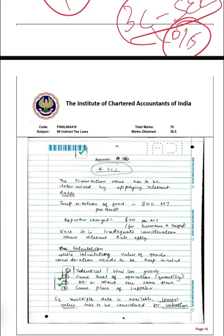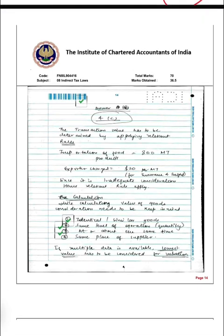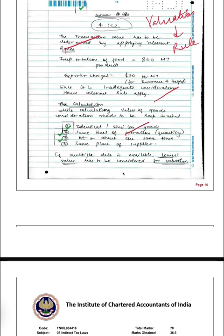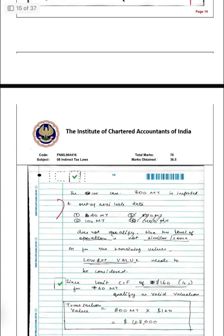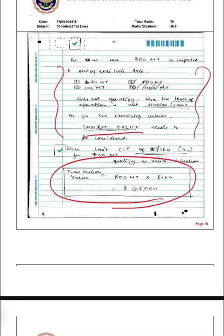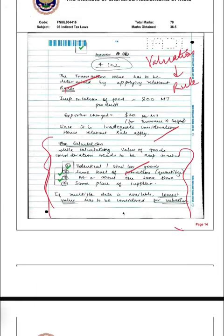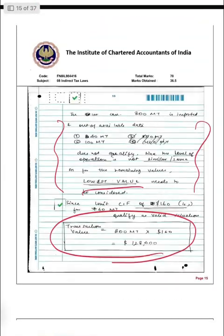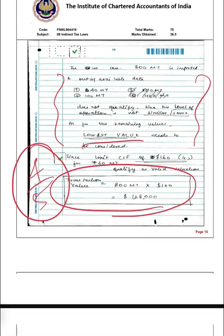The next question was 4C on custom valuation rules. I didn't remember the exact rule number, so I simply explained how it would happen. I wrote the valuation conditions, which was important and necessary. I explained how it will be the lowest value and showed the calculation part. The framing of the rule was done a little casually because I didn't remember it precisely, but I still got 4 out of 5 marks — I lost one mark due to some theory gaps.